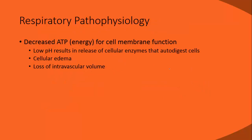Pathophysiology summary: decreased ATP causes low pH, resulting in acidosis, autodigestion, cellular edema, and loss of intravascular volume. Decreased intravascular volume equals decreased blood pressure, which equals shock.